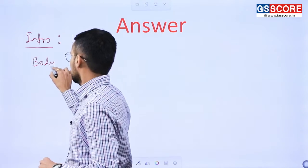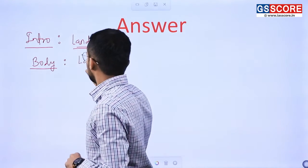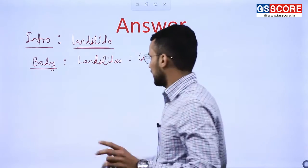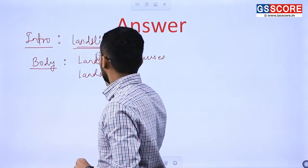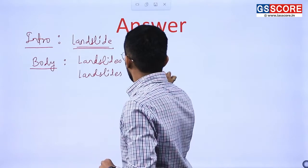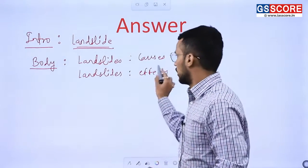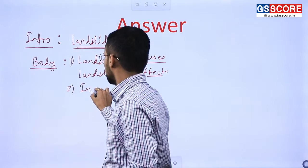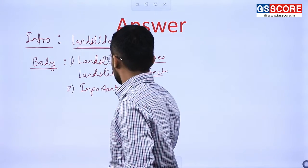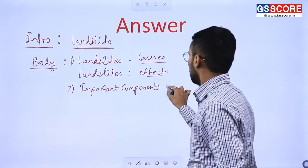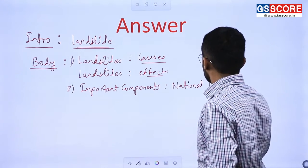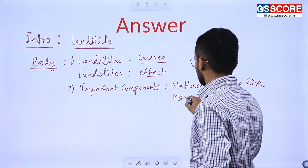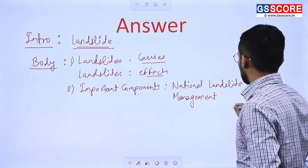In the body part of the answer, firstly we will talk about landslide and its causes, which we have already discussed. Secondly, landslides and their effects, again already discussed. So landslide causes and effects is the first part. Then in the second part, we will discuss the important components of the National Landslide Risk Management Strategy.